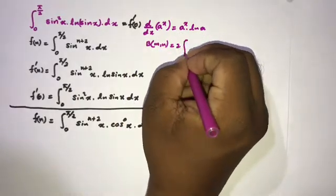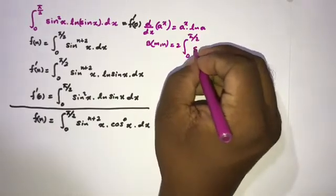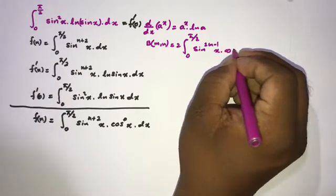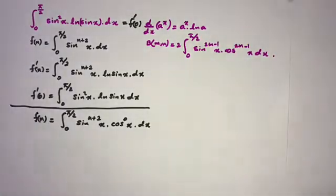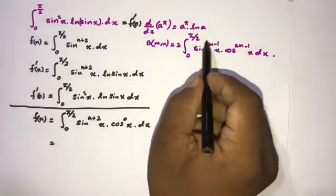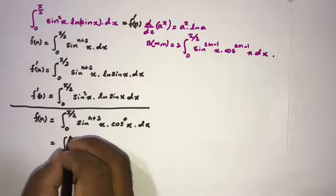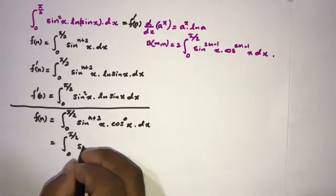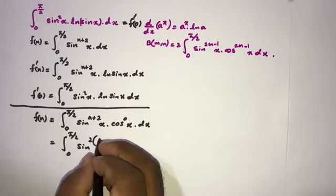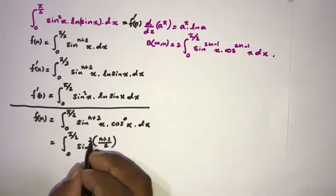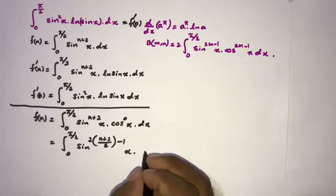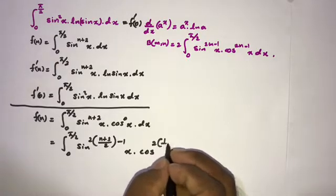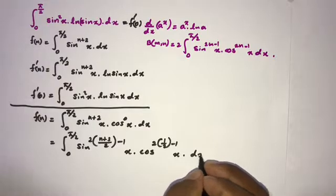The Beta function is: β(m, n) = 2 ∫₀^(π/2) sin^(2m−1)(x) · cos^(2n−1)(x) dx. Matching powers, we write sin^(n+2)(x) as sin^(2·(n+3)/2 − 1)(x) so that (n+2) = (n+3)−1, and cosine^(2·(1/2)−1)(x).